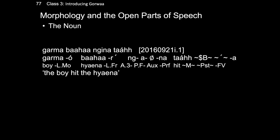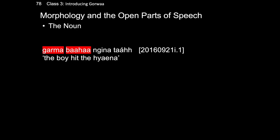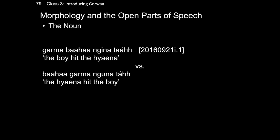Moving now to morphology and the open parts of speech, we will look at the noun followed by the verb. Here is a simple phrase in Gorwa: garma baha nina tah, meaning 'the boy hit the hyena.' The phrase contains two nouns: the boy, garma, and the hyena, baha. In a second phrase, baha garma muna tah, 'the hyena hit the boy,' the noun garma is the object. Note that despite its role in the sentence, the form of the noun stays the same. Rather, what happens is that the agreement on the verb form changes. The position of the arguments would typically change as well, but where agreement explicitly differentiates the arguments, the change of position is not obligatory.